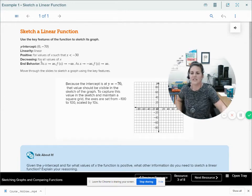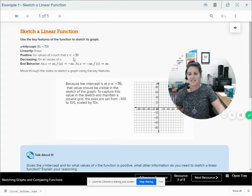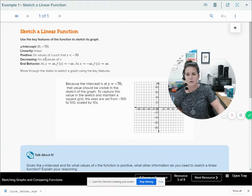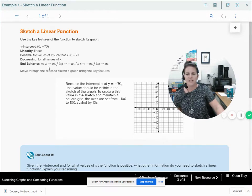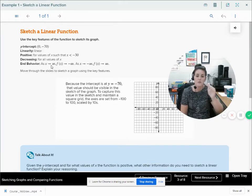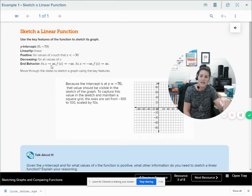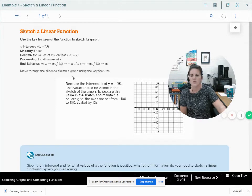For positive values, it tells me that for values of x such that x is less than negative 30, the values are positive, and it tells me that it's decreasing for all values of x. My function is decreasing for all values of x. And then it tells me end behavior. As x is going towards positive infinity, the end is going down. And as x is going towards negative infinity, my function is going up. So we can move through the slides to sketch the graph of the key features.